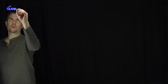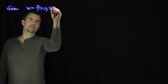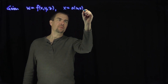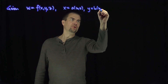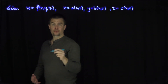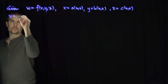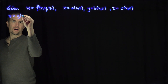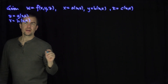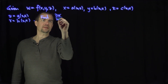Suppose we're given a function w = f(x, y, z), and let's suppose that x is a function a of u and v, that y is a function b of u and v, and z is a function c of u and v. Furthermore, let's suppose that u and v are themselves functions — u is some function g of s and t, and v is a function h of s and t. Our objective is to find the partial derivative of w with respect to t.